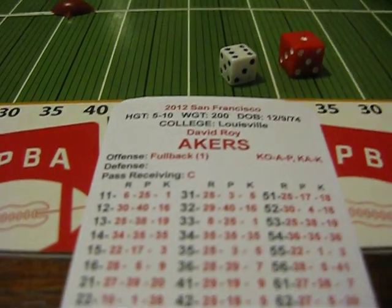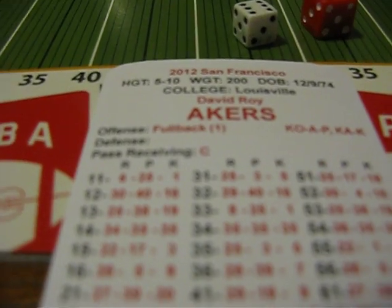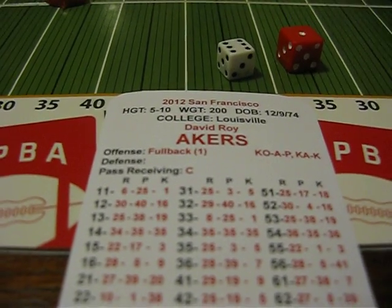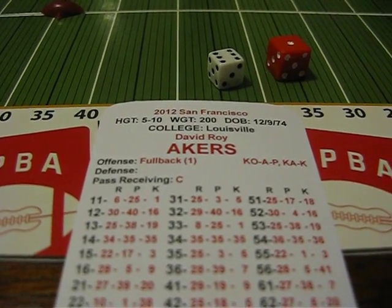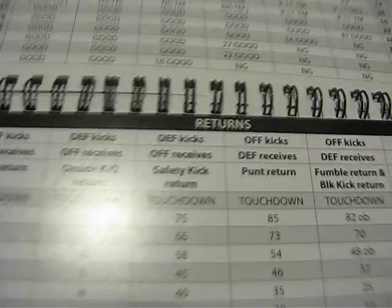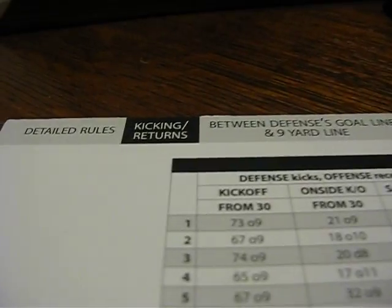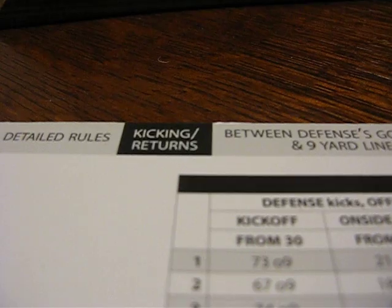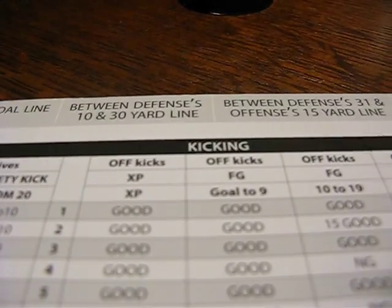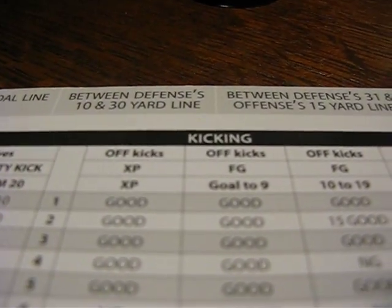Dice roll 16. 16 on Akers' card is a 9. Let's go to the kicking and returns table and look for kicking.